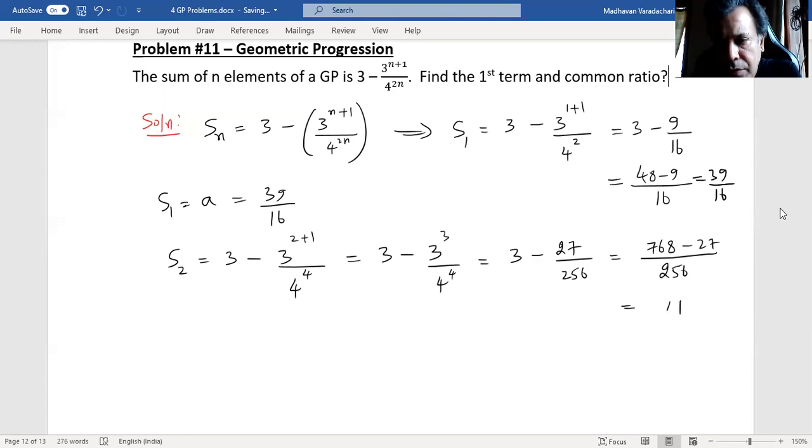So that will give us 741 by 256. This is sum up to two terms. So what is sum up to two terms? S_2 is term 1 plus term 2. Term 1 is nothing but a, and term 2 is...